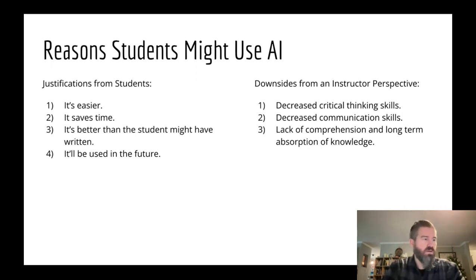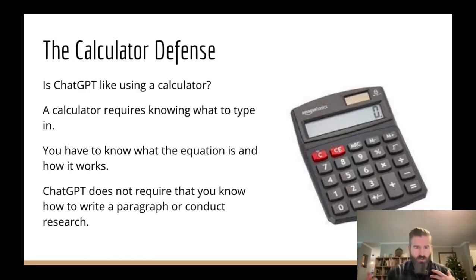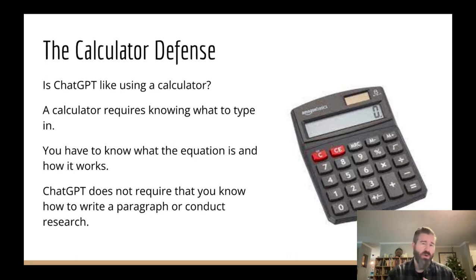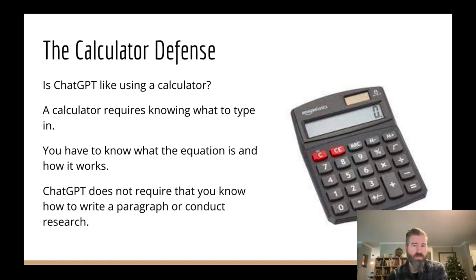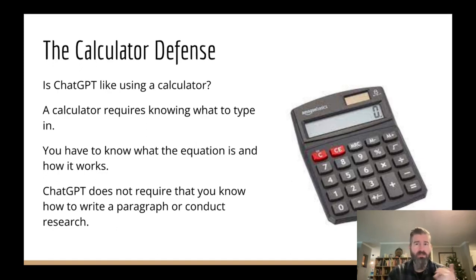Some students have said that ChatGPT is a tool that'll be used in the future — I call it the calculator defense. Students will say ChatGPT is just like using a calculator, which I don't think is true. A calculator requires you to know what to type in. Think about a trigonometry class where you need to find the inverse sine of something — you have to know how to put that into the calculator, you have to know what to do with that information, you have to know what the equation is and how it works. ChatGPT does not require that you know how to write a paragraph or conduct research. So I don't think it's an apples-to-apples comparison. There's this idea of the golden hammer: when all you have is a hammer, everything looks like a nail. It's a tool, an interesting tool.